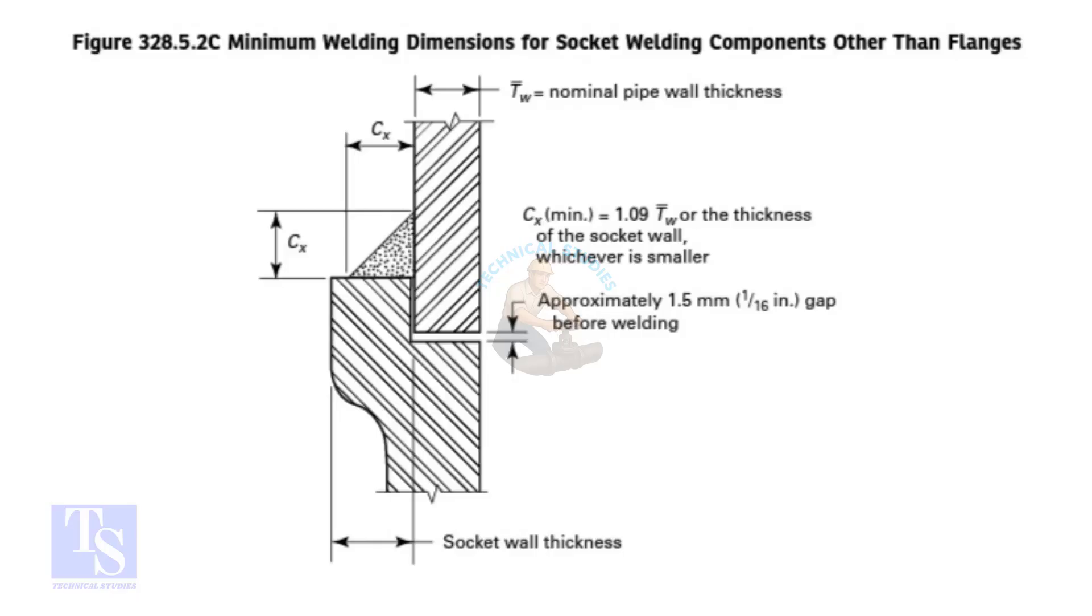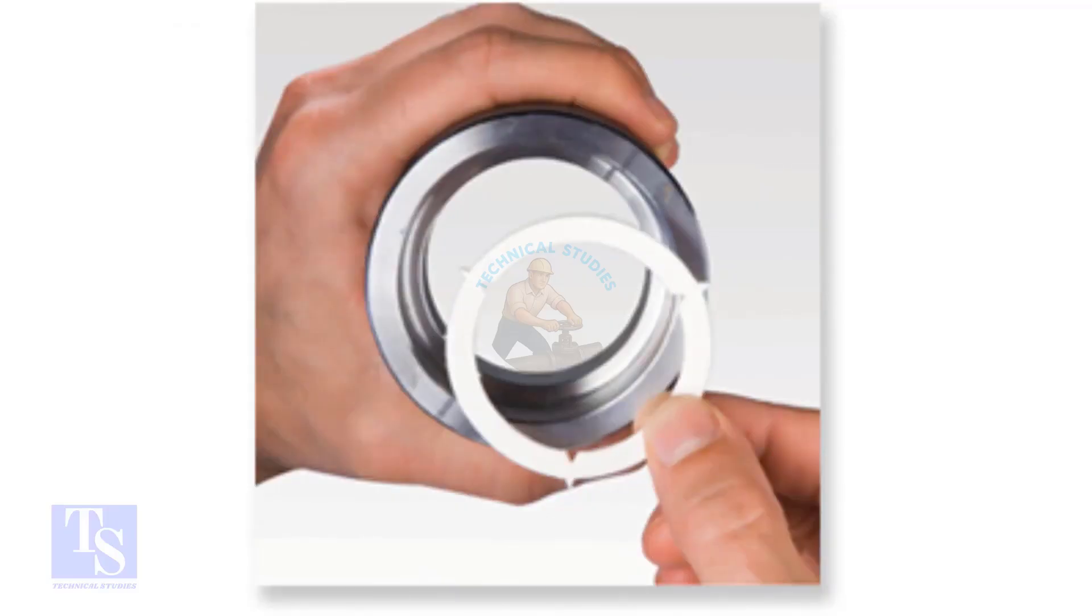The code doesn't specify the maximum gap. However, don't make a gap more than 2.5mm. I am going to fit up a tee on a pipe, assuming that a flange is already fitted on it.